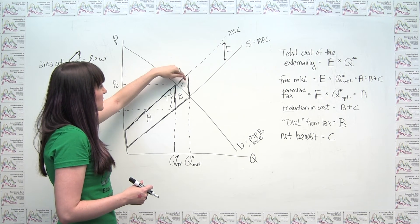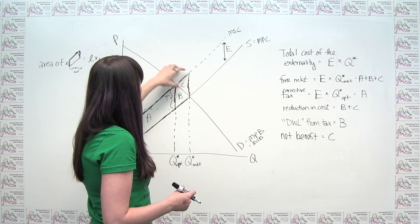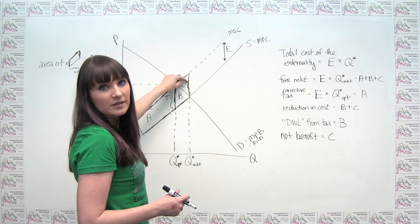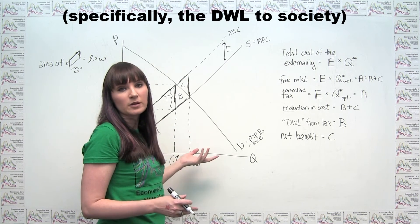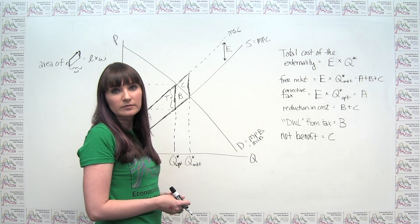Interestingly, area C is actually the deadweight loss associated with the free market when we have this negative externality. Putting the corrective tax in place makes society better off by amount C.